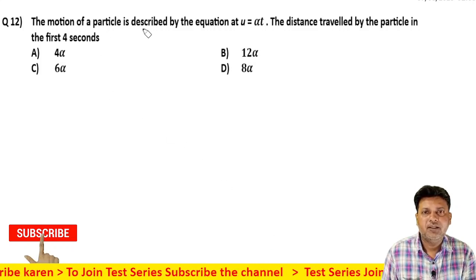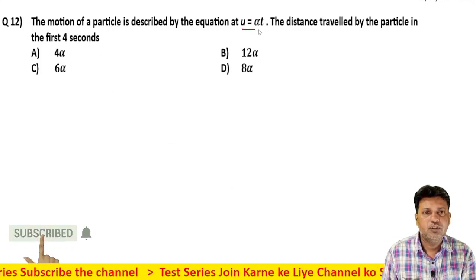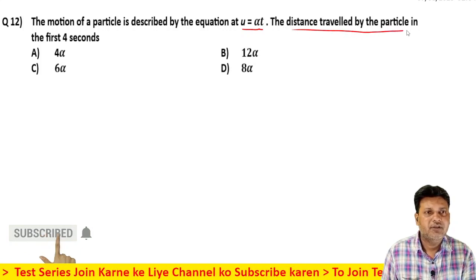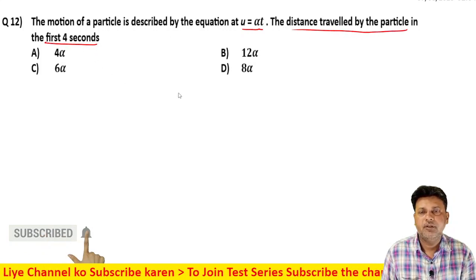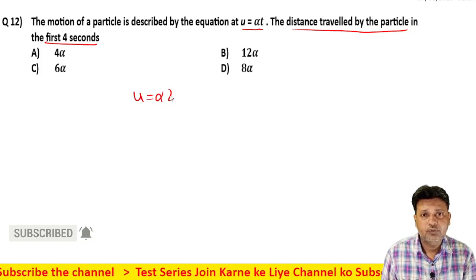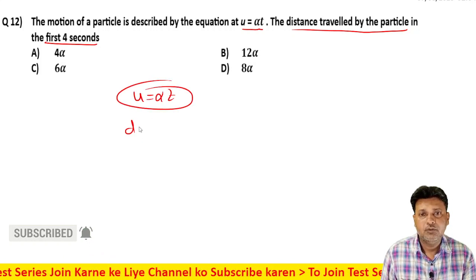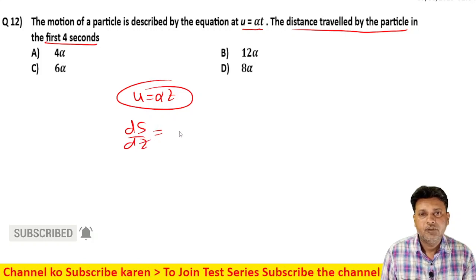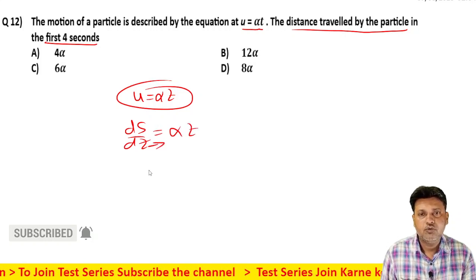The motion of the particle is described by equation u equals alpha t. The distance traveled by the particle in the first four seconds: take u equals alpha into t. ds by dt equals alpha into t.